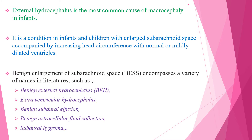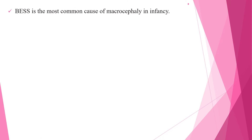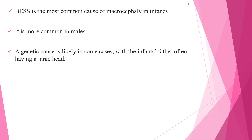Benign enlargement of subarachnoid space encompasses a variety of synonyms in different literatures, such as benign external hydrocephalus, extraventricular hydrocephalus, subdural hygroma, and benign subdural effusion. It is the most common cause of macrocephaly in infancy and it's more common in males, and a genetic cause is likely in some cases, with the infant's father often having a large head.